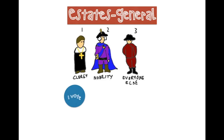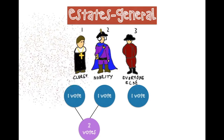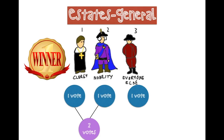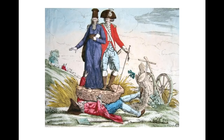Here's how it breaks down: the first estate gets one vote, the second estate gets one vote, and the third estate gets one vote. That's really unfair because the first and second estates are such a small percent of the population, while the third estate is everybody else. That was the way it was to keep everybody else out of power. Anytime there was a vote, the first and the second estate would vote together — voting no on the taxes — while the third estate would only have one vote. So the first and second estates always end up as the winner, and the third estate always ends up as the biggest loser. This is completely unfair, and this is really what drives the start of the revolution.